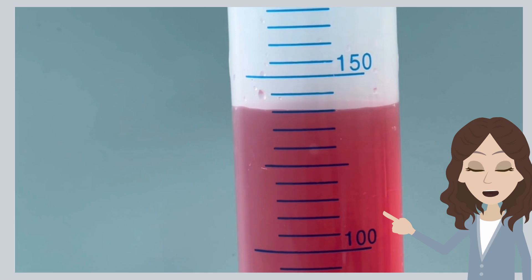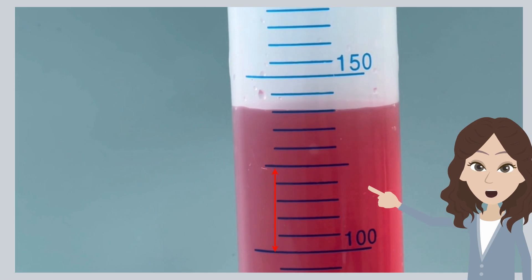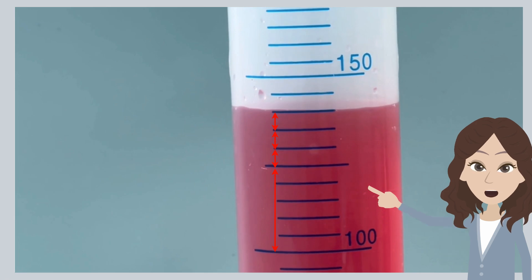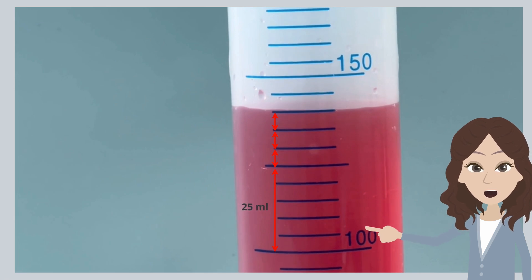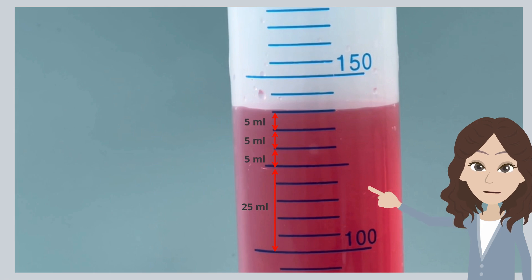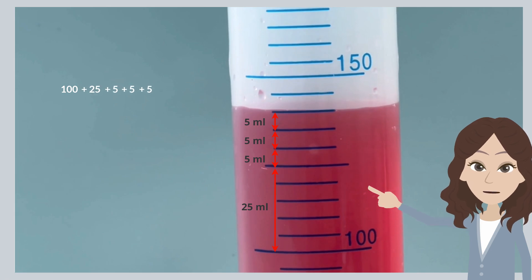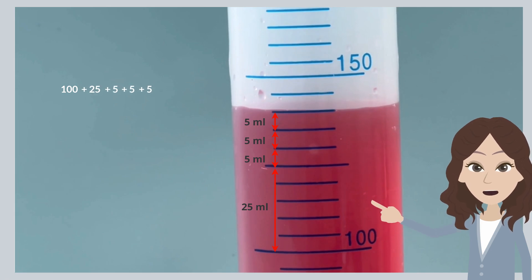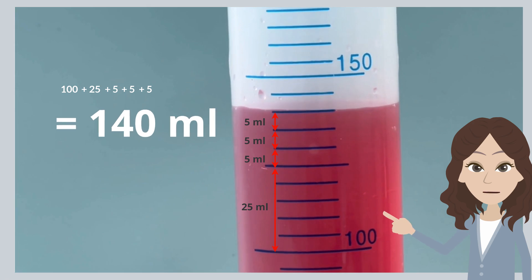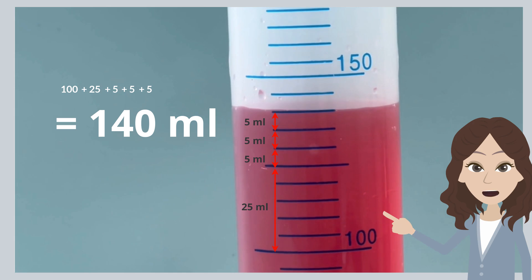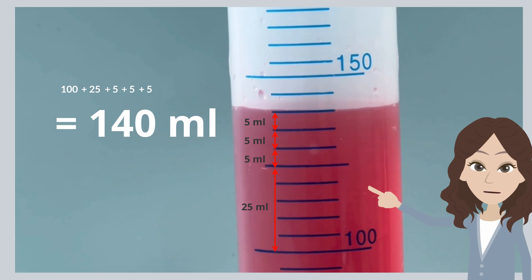From 100 milliliters, there is one long interval and three short intervals. Remember that each long interval represents 25 milliliters and each short interval represents 5 milliliters. So, we add 25 plus 5 plus 5 plus 5 to 100, which gives us 140. There is 140 milliliters of liquid. Did you get it right?